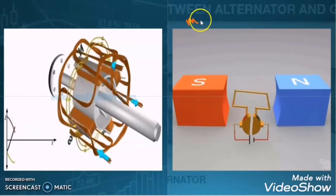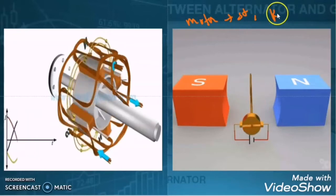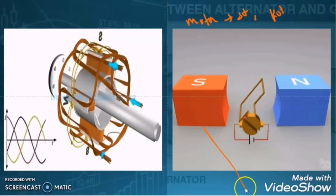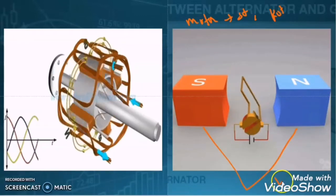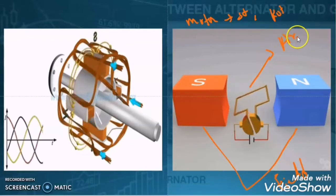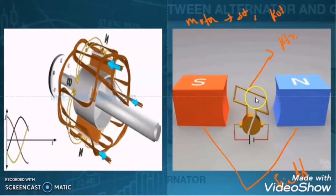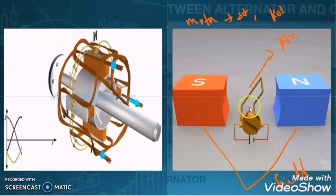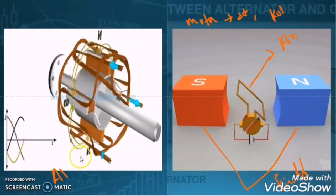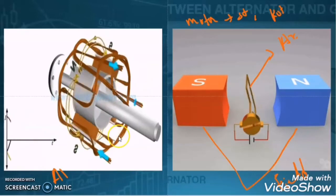As we know, in a motor there are two windings — one is the stator winding and the second one is the rotor winding. In the same way, in a generator also there are two windings: this is called field winding and this one is called armature winding. In case of a generator, the armature is moving with respect to the field winding, and in case of an alternator, the field winding is rotating with respect to the armature winding.